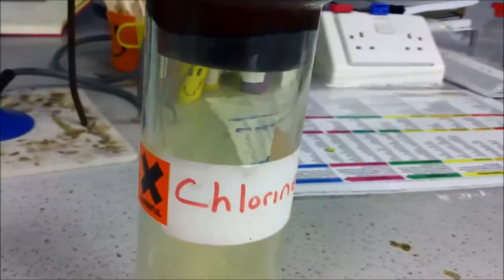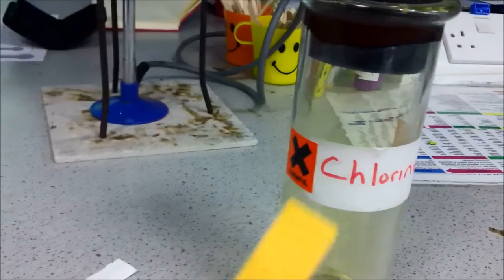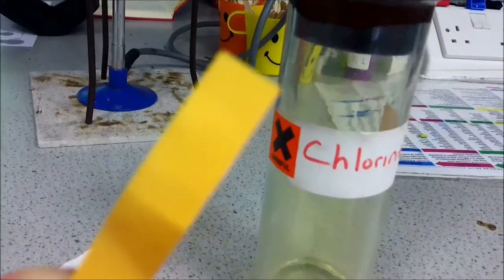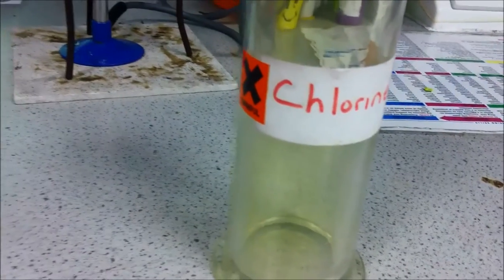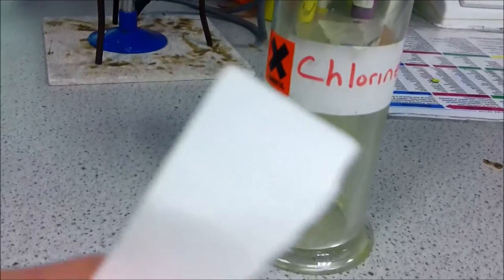So the easiest way to do it is to take some litmus paper. A bit earlier I put this litmus paper inside the chlorine and it bleached it.